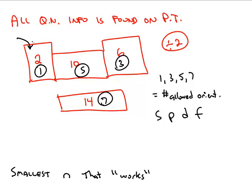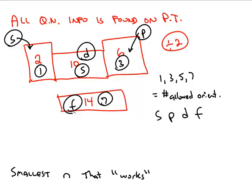This block of the periodic table that has two columns is called the S block. Six columns makes the P block, ten columns is the D block, and fourteen columns is the F block. The block of the periodic table tells you what type of orbital the last electron is going to be going into. For example, the element iodine is in the P block. Iodine has 53 electrons, and when you assign all of the electrons to orbitals, the last electron will end up being in a P orbital.